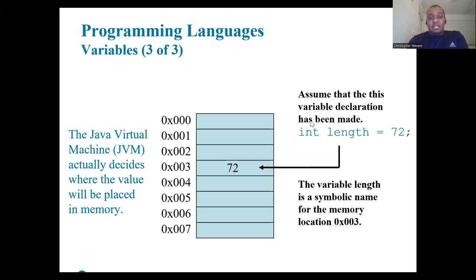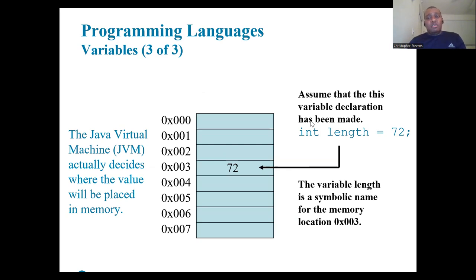To summarize, we've covered the history of Java, why it was developed, its compilation process, punctuation, and an example program. Java's portability and cross-platform compatibility have made it a staple in programming.